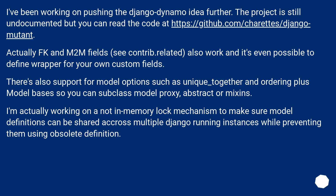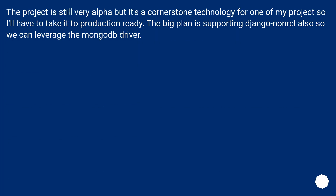I've been working on pushing the Django Dynamo idea further. The project is still undocumented but you can read the code at this URL. Actually, FK and M2M fields — see contrib.related — also work, and it's even possible to define a wrapper for your own custom fields. There's also support for model options such as unique_together and ordering, plus model bases so you can subclass model proxy, abstract, or mixins. I'm working on a not-in-memory lock mechanism to make sure model definitions can be shared across multiple Django running instances while preventing them from using obsolete definitions. The project is still very alpha but it's a cornerstone technology for one of my projects so I'll have to take it to production-ready. The big plan is supporting Django non-rel also so we can leverage the MongoDB driver.